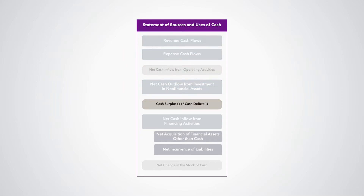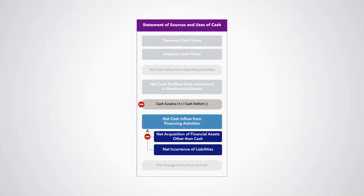The cash surplus/deficit can also be calculated as the net acquisition of financial assets other than cash minus the net incurrence of liabilities — that is, the net cash inflow from financing activities — plus the net change in the stock of cash.